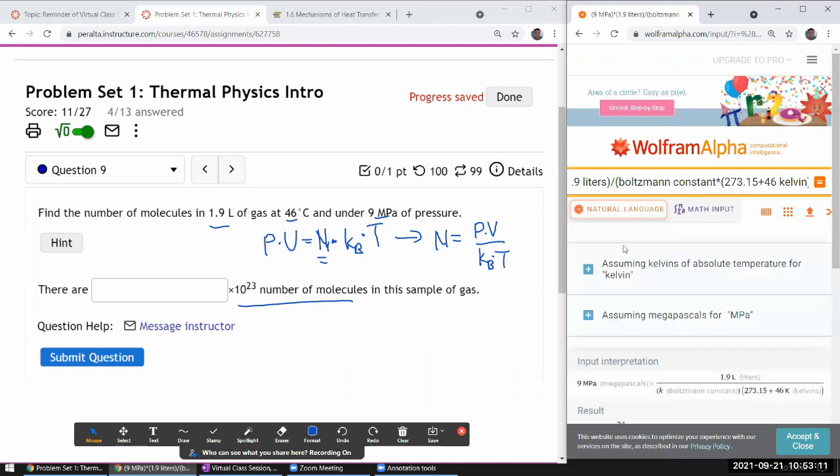By the way, the temperature has to be in Kelvin. When you look at the Boltzmann constant, you'll see that it has Kelvin—it's not interchangeable with degrees Celsius.